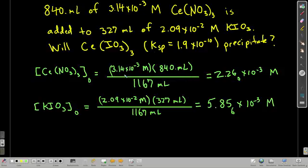First thing we have to do, our goal initially is to calculate Q, and for Q, we need the concentrations of the molarities. Because we're adding 840 milliliters and 327 milliliters together, we're diluting both of these solutions. So we have to use the dilution equation to calculate our initial concentrations so that we can plug into Q. For the cerium 3 nitrate, take the M1 times V1 over V2, and that gives us M2.